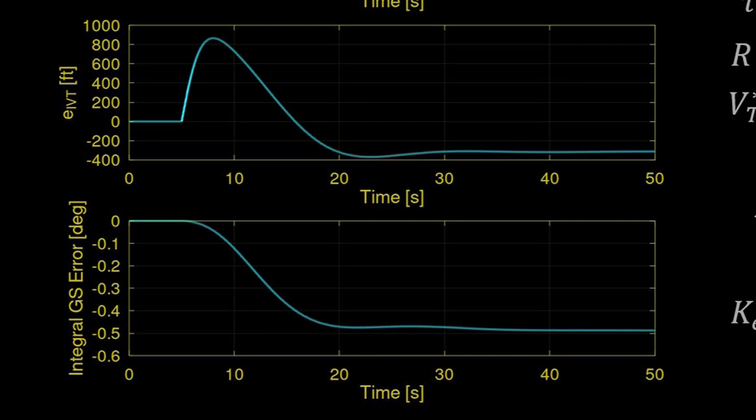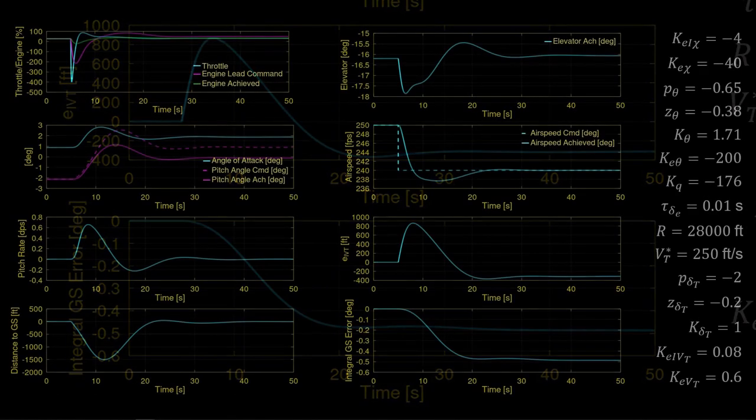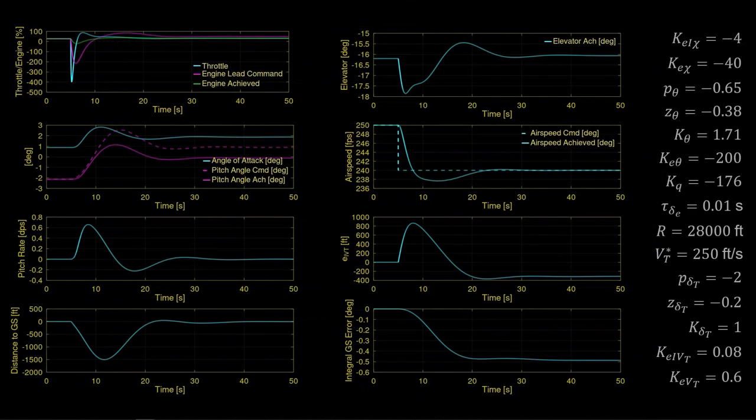The airspeed integral error comes to a non-zero equilibrium, as expected. The same holds for the integral glide slope error — both constant, non-zero integral errors indicating asymptotic tracking. Given this is the first time we're seeing this system achieved with separately tuned loops, it's not bad. We'll do one round of retuning.